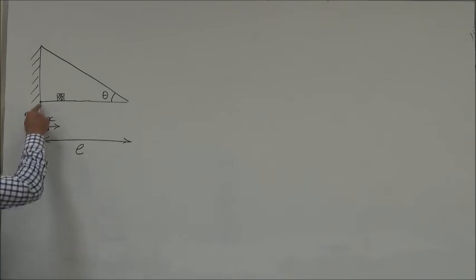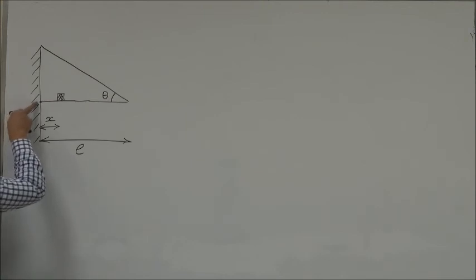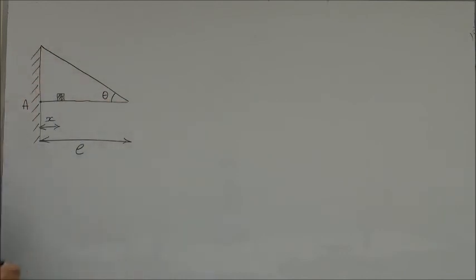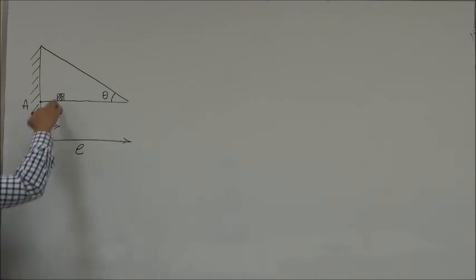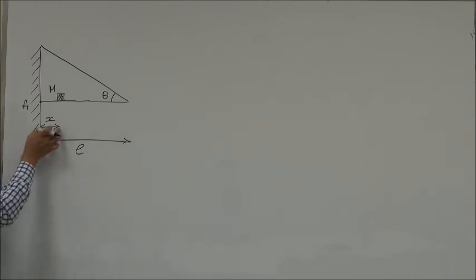In this problem we have a horizontal bar which is fixed at point A on one side to the wall, and is supported by a cable on the other side. The cable makes an angle of theta with the bar. We are given the length of the bar L and the mass and weight of the bar. On the bar we place a block of mass M and weight W, placed at distance X from the wall.